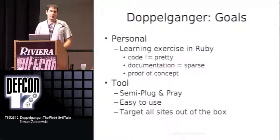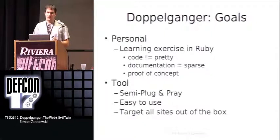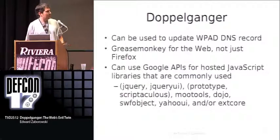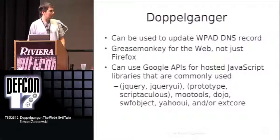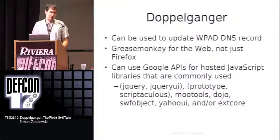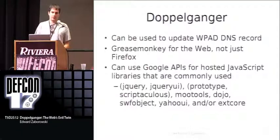For the tool itself, I wanted it to be able to sit down on the network and just go immediately. I didn't want to have to configure it a whole lot, and I wanted it to target all sites out of the box. Doppelganger itself can create that WPAD record for us, and if you can get onto a network, those networks usually trust internal DNS updates — so you can become the proxy for the internal network. If any of you are familiar with Greasemonkey, this is kind of like Greasemonkey for an entire network.